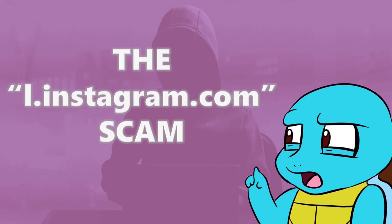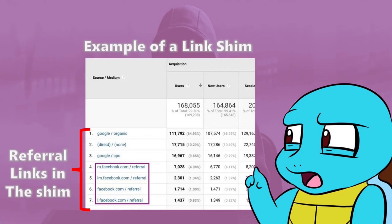The l.instagram.com link is what's called a link shim. The prefix of the link starting with "l." is designed as a redirect, and the hash characters at the end of the link is a path. What this does is it will send you to Instagram's website at the end, which is what you might imagine it will do, but in the meantime, the "l." and the random characters at the end put you through a bunch of redirects going to random websites, and it's possible that along the way this can actually expose your account in a variety of ways.